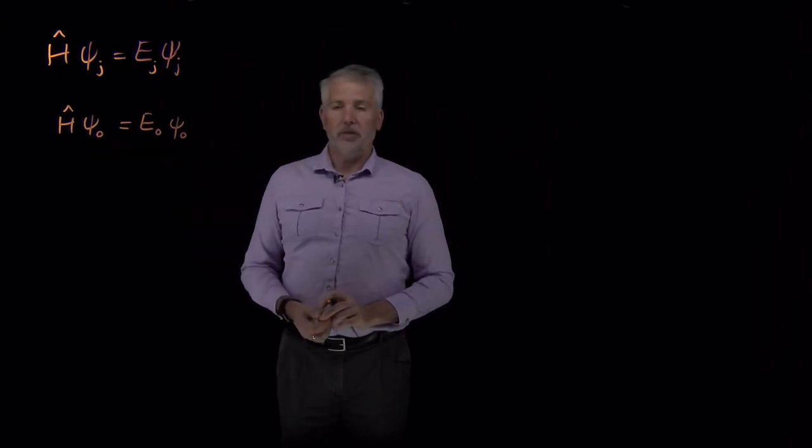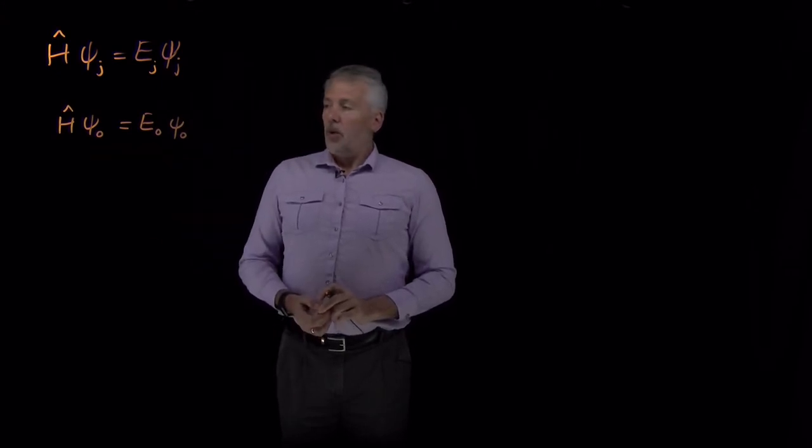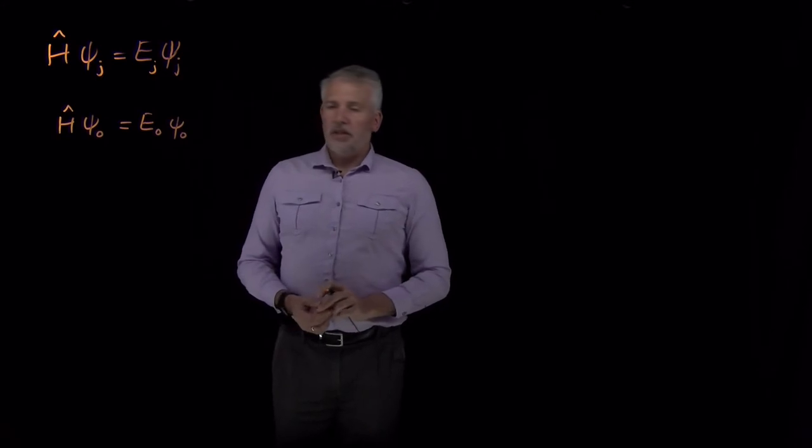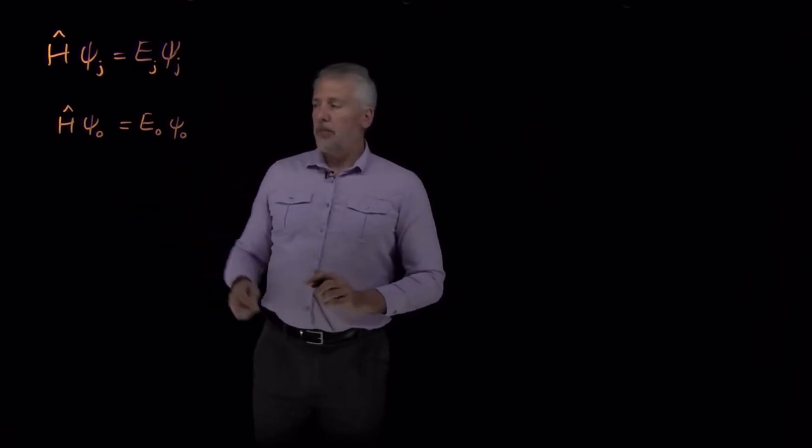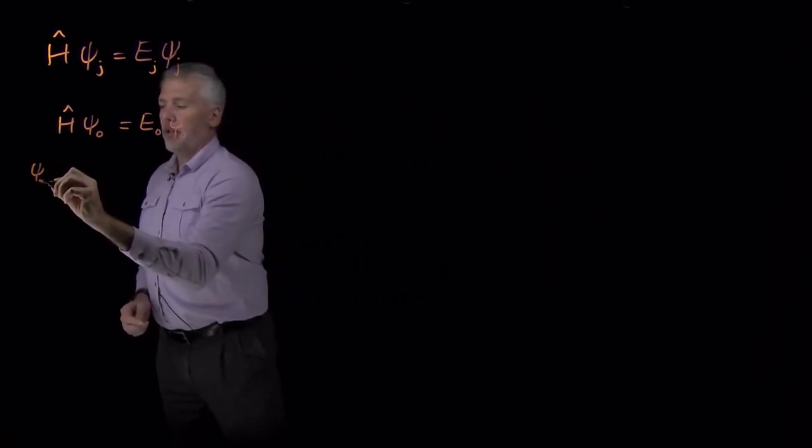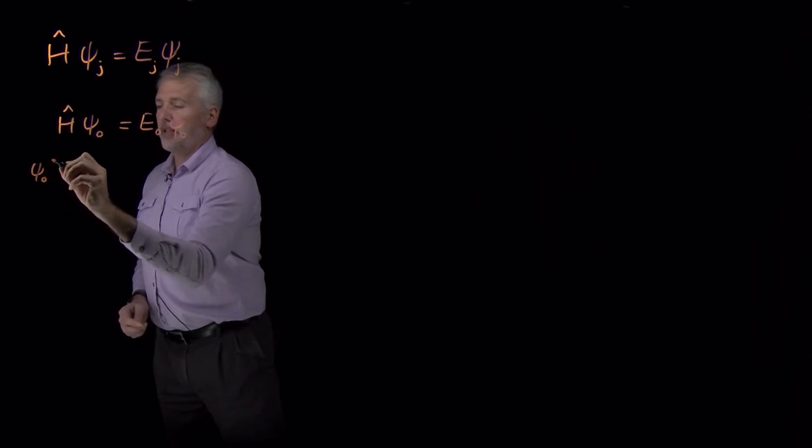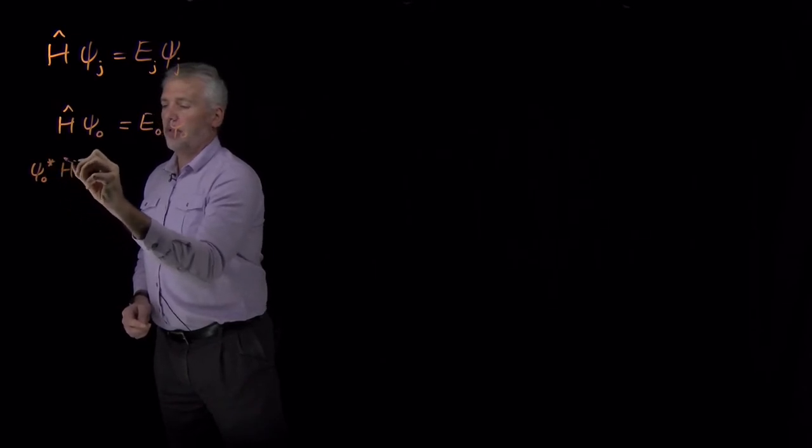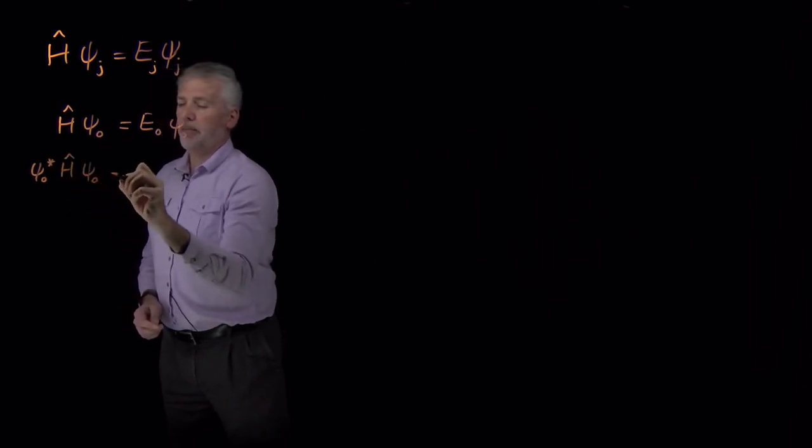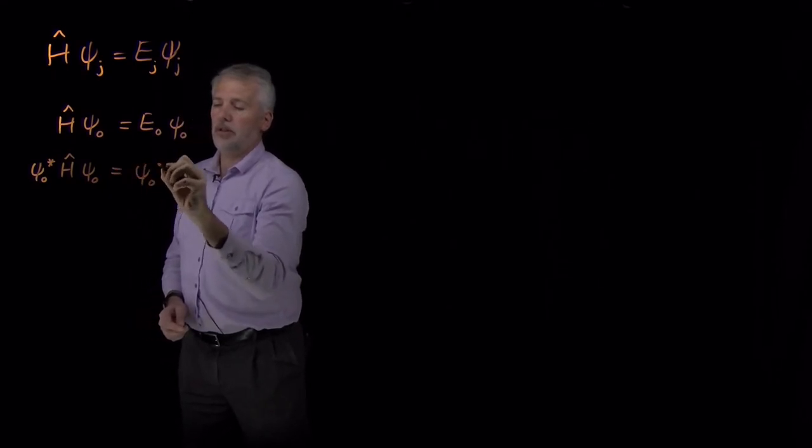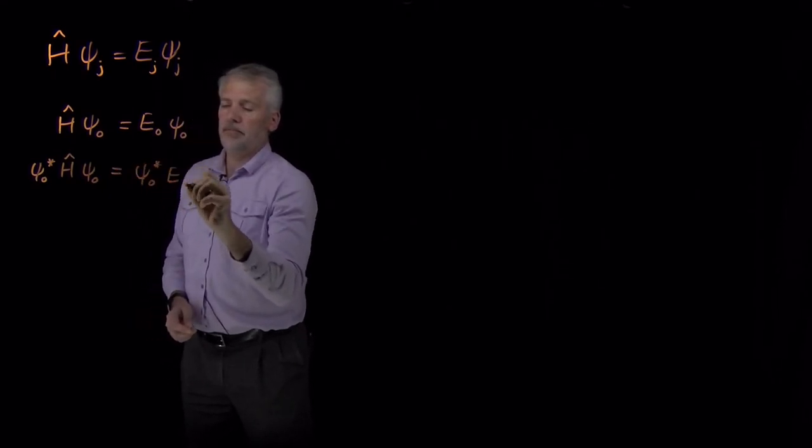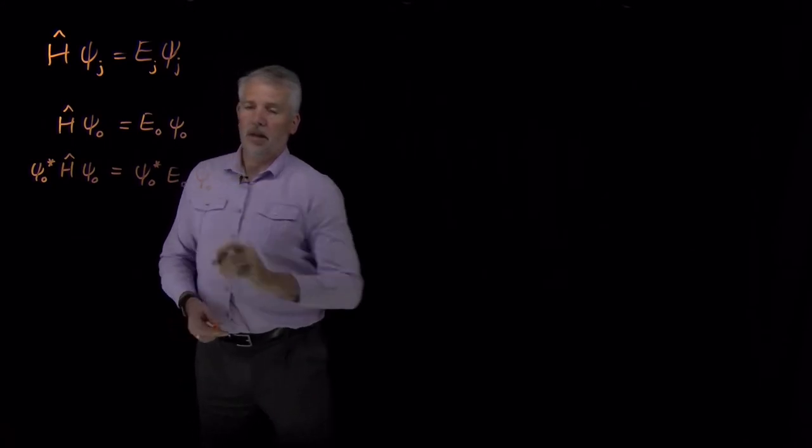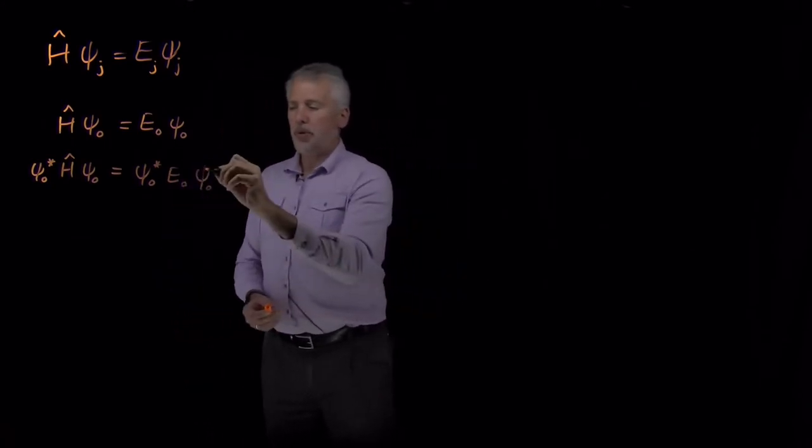The Schrödinger equation is still valid. One thing we can do with this equation is pre-multiply on both sides of this equation. I'm going to multiply on the left side of the equation by ψ₀ complex conjugate. So I'm pre-multiplying by ψ₀* on both sides of the equation.